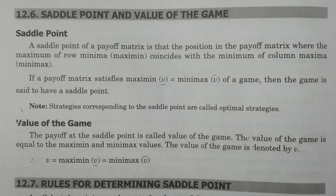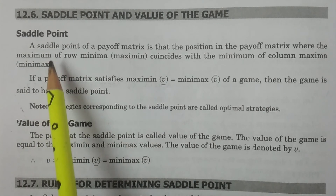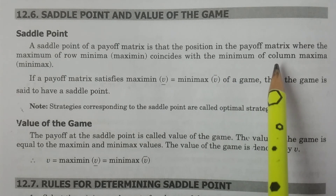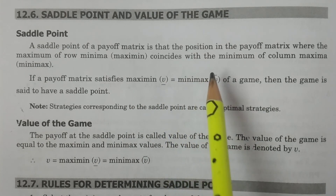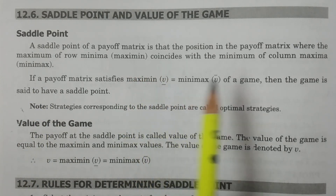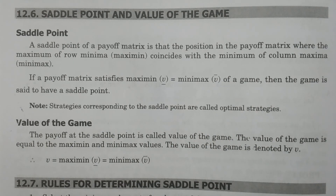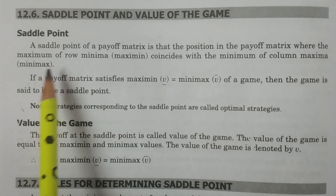What is a saddle point? A saddle point of a payoff matrix is that position in the payoff matrix where the maximum of row minima — called maximin — coincides with the minimum of column maxima — called minimax. That particular position of the payoff matrix is known as the saddle point.